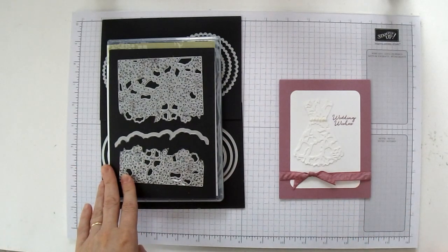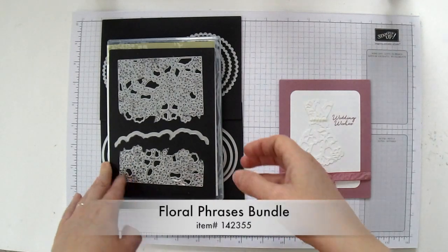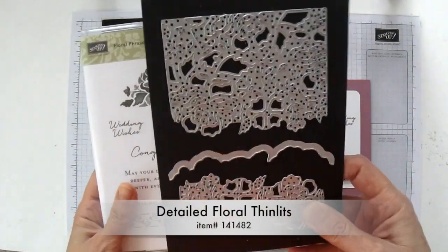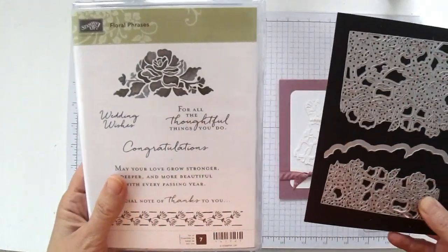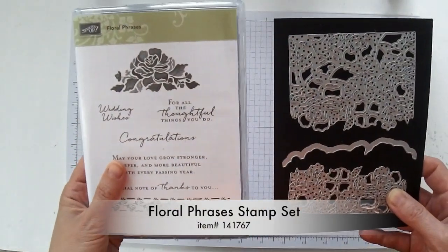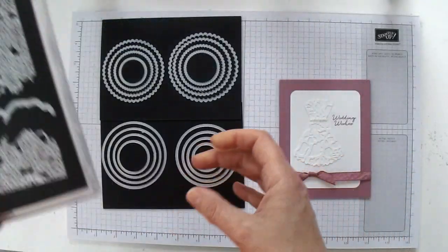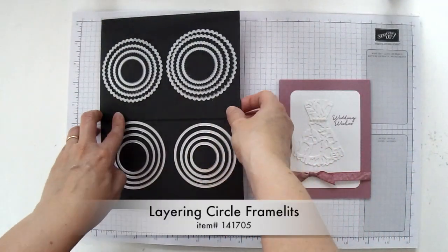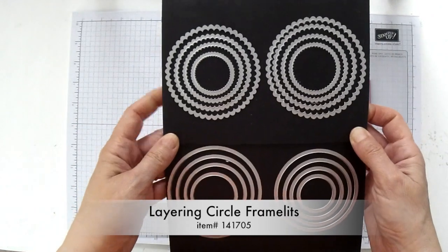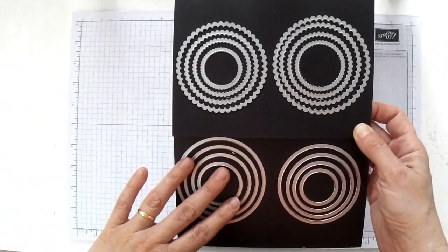The Floral Phrases Bundle comes with two things in it: the detailed floral thinlets and the Floral Phrases stamp set, and we're going to be using both of these to make the card. Also, we are going to need the Layering Circles Framelits, and they come with both scalloped circles and smooth circles.